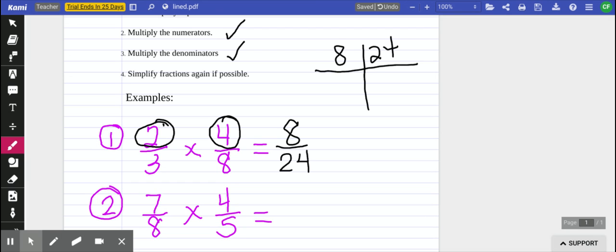So my factors of 8 are 1 times 8 and 2 times 4. My factors of 24, it's a much longer list. 1 times 24, 2 times 12, 3 times 8. I'm going to stop because I see that the largest number they have in common is 8. We just found the greatest common factor.